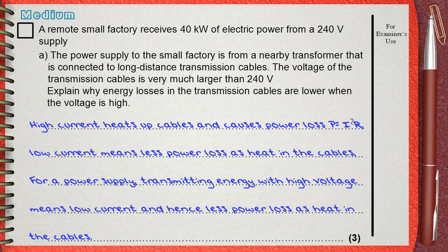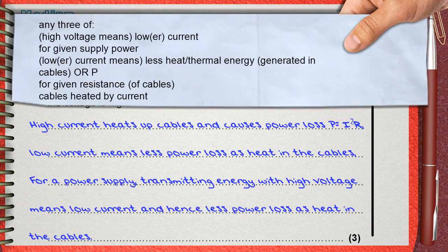Here are three marks, mentioning that high voltage means lower current for a given power supply, and mentioning that lower current means less heat or thermal energy loss in the cables. Also mentioning that cables are heated by the current. These are the three marks.